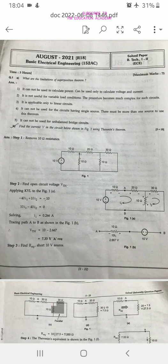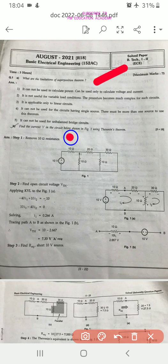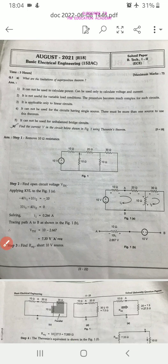The first question is, what are the limitations of superposition theorem? Then find the current in the circuit below using Thevenin's theorem. Just go through this PDF.